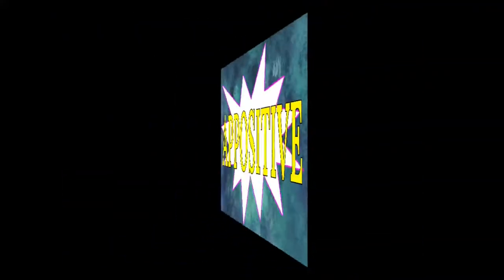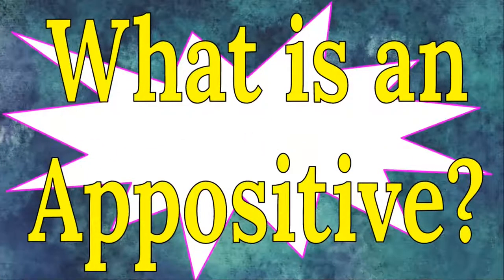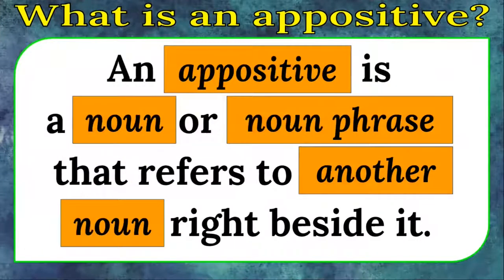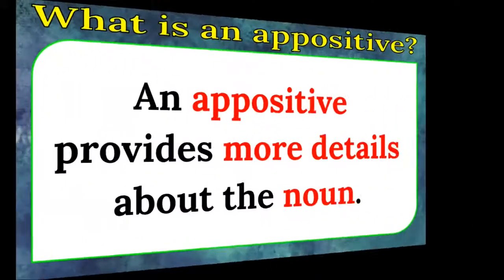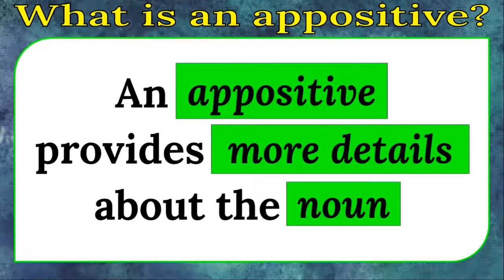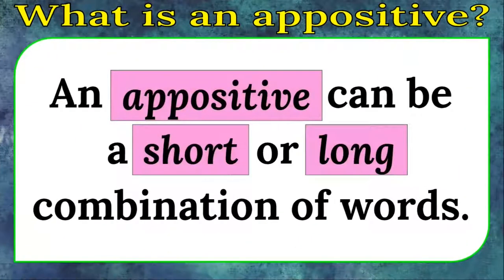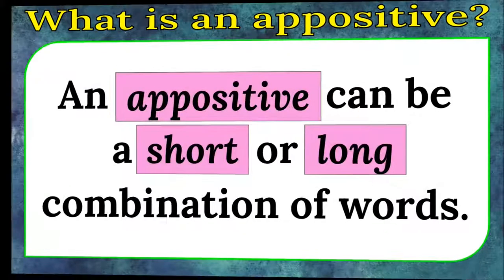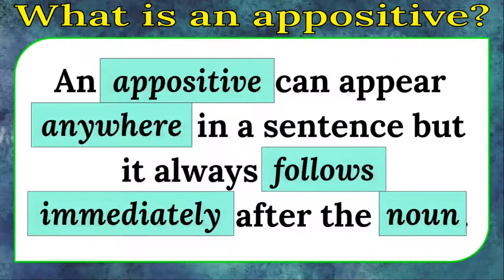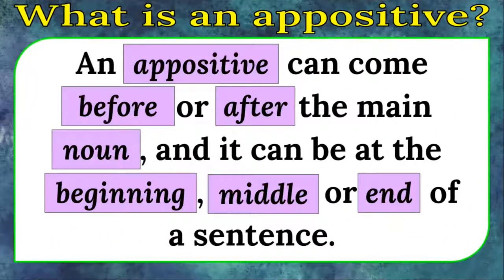Appositive. What is an appositive? An appositive is a noun or noun phrase that refers to another noun right beside it. An appositive provides more details about the noun. An appositive can be a short or long combination of words. An appositive can appear anywhere in a sentence, but it always follows immediately after the noun. An appositive can come before or after the main noun, and it can be at the beginning, middle, or end of a sentence.